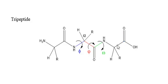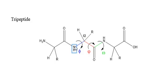The alpha carbon is the carbon of an amino acid which is directly connected with the amino functional group and the carboxylic acid functional group. Now, the phi angle is the angle between the alpha carbon and the nitrogen of the peptide.